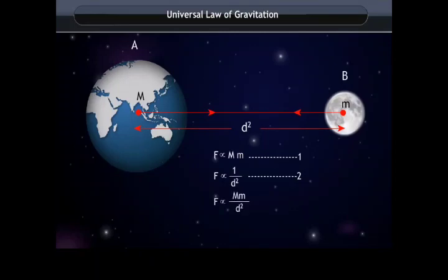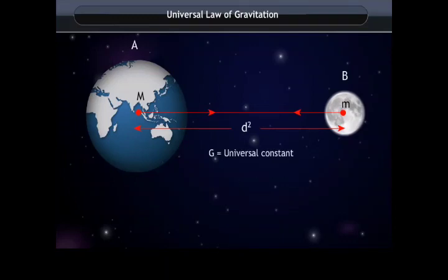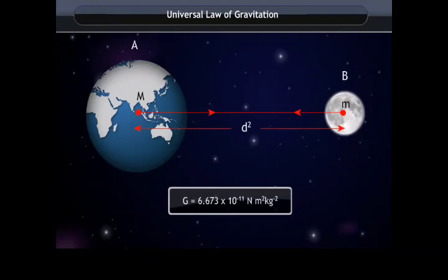By combining these equations, we get: F = G·Mm/d², where G is the constant of proportionality called the universal gravitational constant. The SI unit of G is obtained by substituting the units of force, distance, and mass — giving Newton meter squared per kilogram squared.